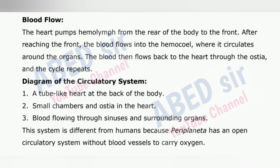Diagram of the circulatory system: 1. A tube-like heart at the back of the body. 2. Small chambers and ostia in the heart. 3. Blood flowing through sinuses and surrounding organs. This system is different from humans because Periplaneta has an open circulatory system without blood vessels to carry oxygen.